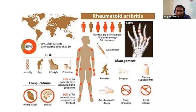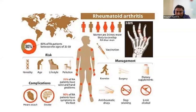Rheumatoid arthritis is more common in females than in males, and can occur at any age, but mainly between 35 to 50 years of age. Risk factors could be genetic, where you have a hereditary predisposition, and various other factors can trigger a genetically predisposed person — smoking, alcohol intake, obesity, stress, and pollution. It can affect other organs also: lung involvement, skin involvement, and you are more prone to develop stroke or cardiac disease. The main treatment is immunosuppressive medicines.